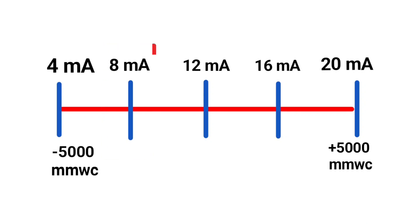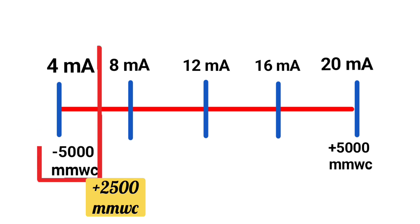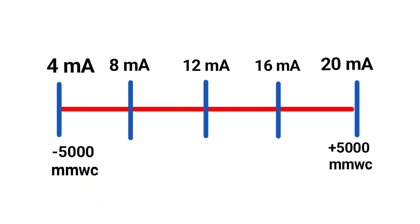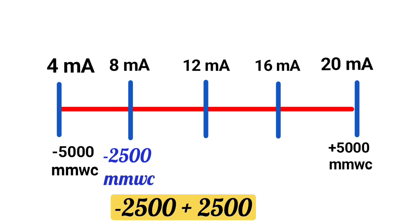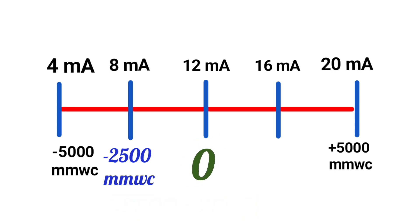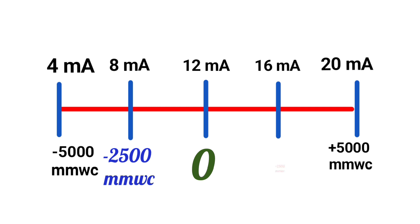To calculate at 8 milliampere, add 2500 mmWC to the previous reading of minus 5000 mmWC, which gives minus 2500 mmWC. Then add 2500 mmWC again, which gives 0. Similarly, to calculate at 16 milliampere, add 2500 mmWC to the previous reading of 0, which gives 2500 mmWC.